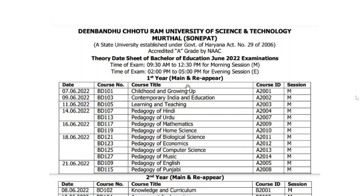The first year — main and reappear — date sheet for Bachelor of Education starts from the 7th. Course number BD-101: Childhood and Growing Up. The course ID is this, and this is the morning session. M is written, which means morning session.